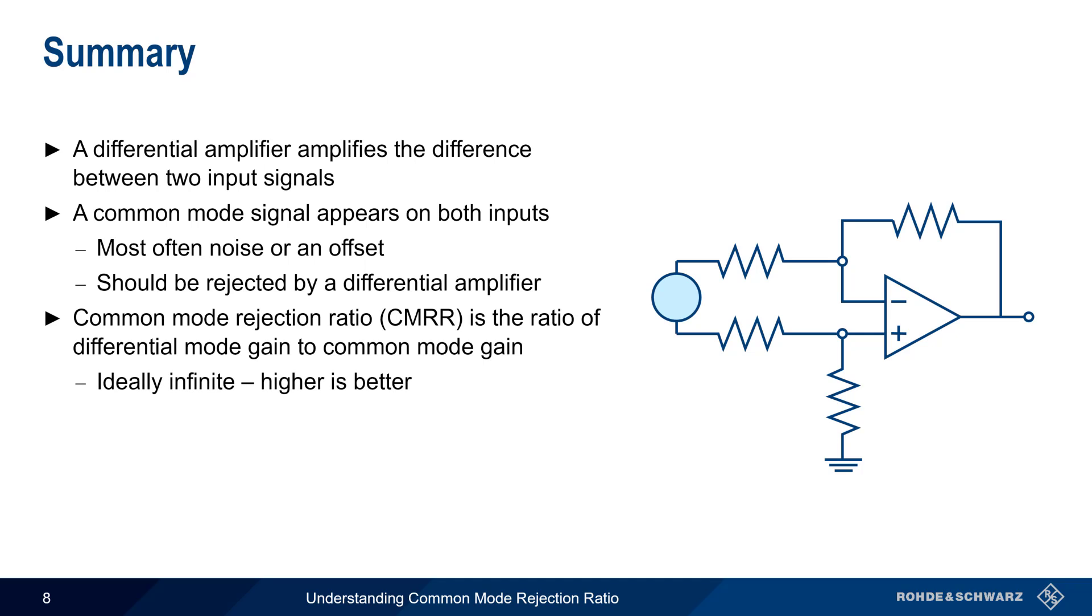Ideally, the common mode gain would be zero, making CMRR infinite. But in practice, a higher common mode rejection ratio is usually desirable.